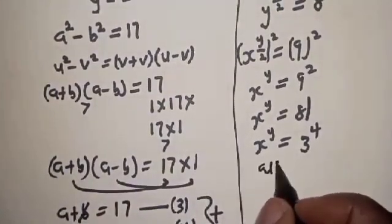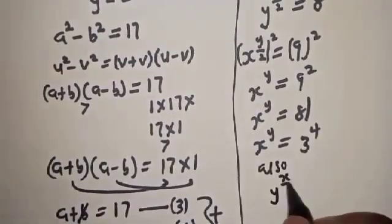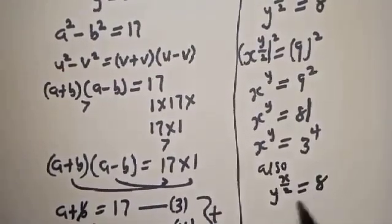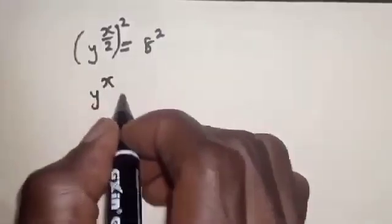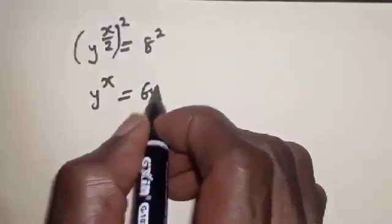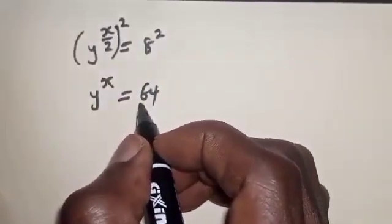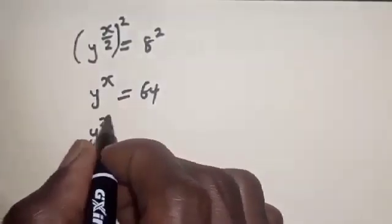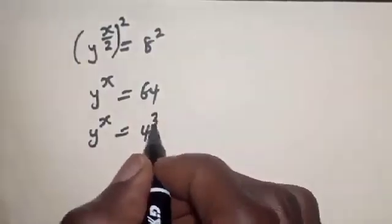From y raised to power (s/2) equals 8, squaring both sides gives y raised to power s equals 64. And 64 is equal to 4 raised to the power 3, so y raised to power s equals 4 raised to power 3.